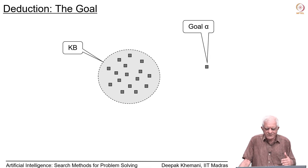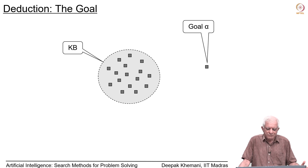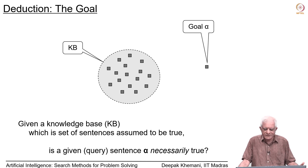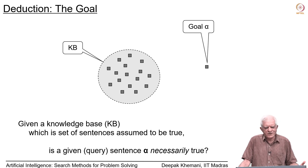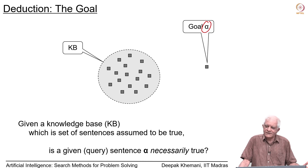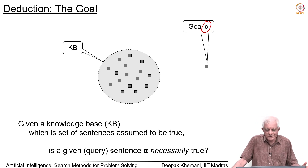The goal of deduction: you are given a knowledge base KB, which is a set of sentences assumed to be true — premises or axioms depending on the domain. The question is: given KB, is a query sentence alpha necessarily true? That is the question we want to answer this week.